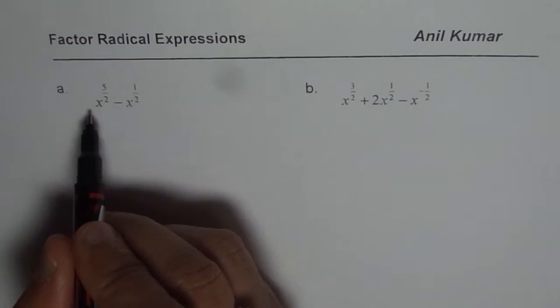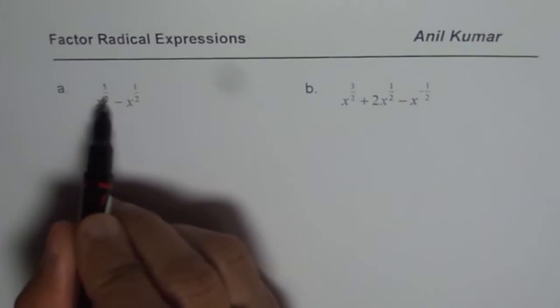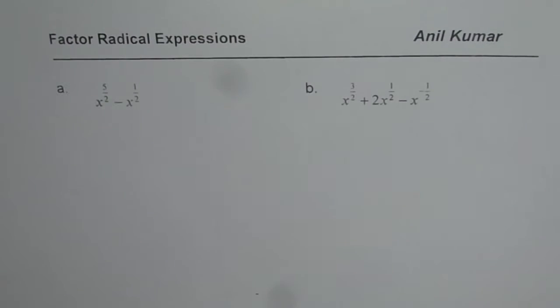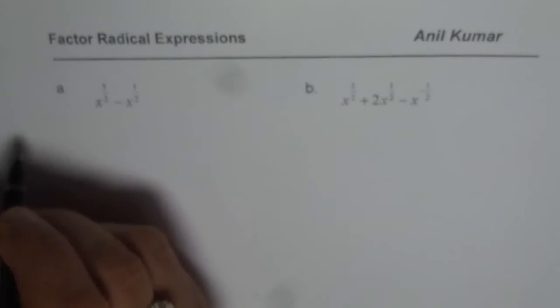First step is look for the lowest power, 5 over 2 and half, which is lower? Half is lower. So factor out x to the power of half, that is the strategy.